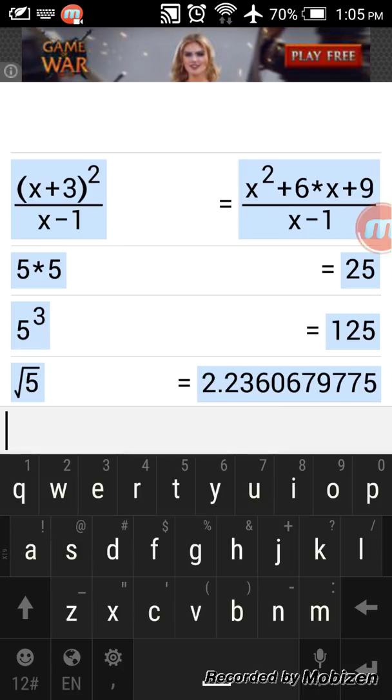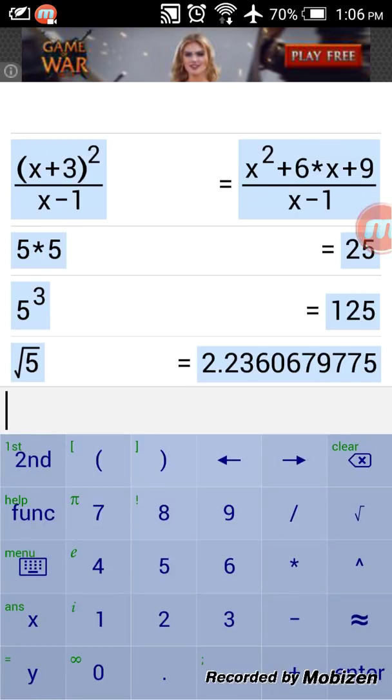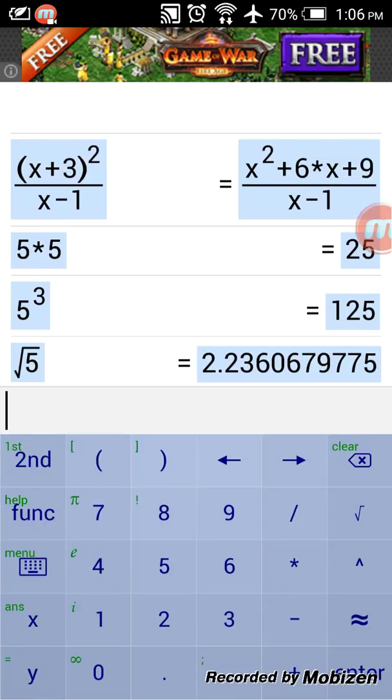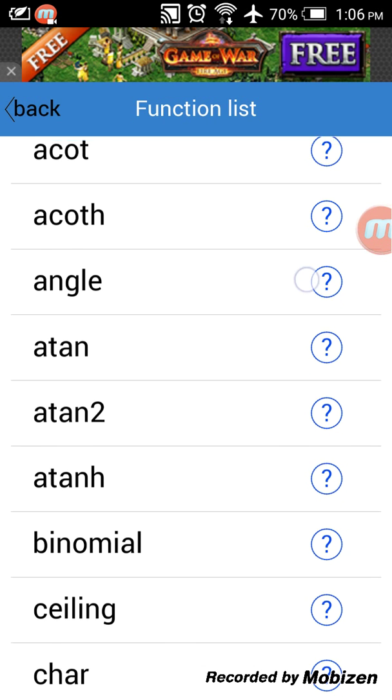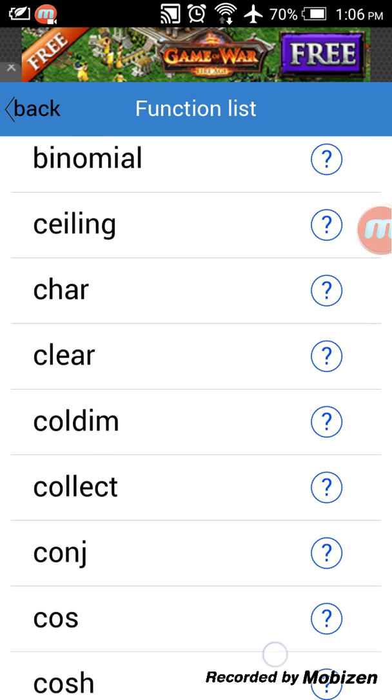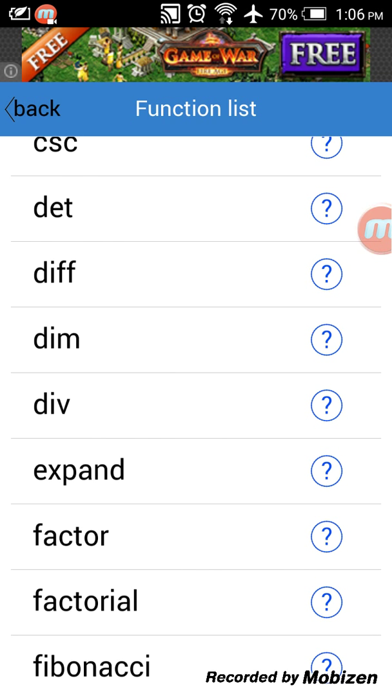You can use the help function which is marked in green here. So you have all the functions that you can use in the calculator with a question mark to tell you what they're used for.